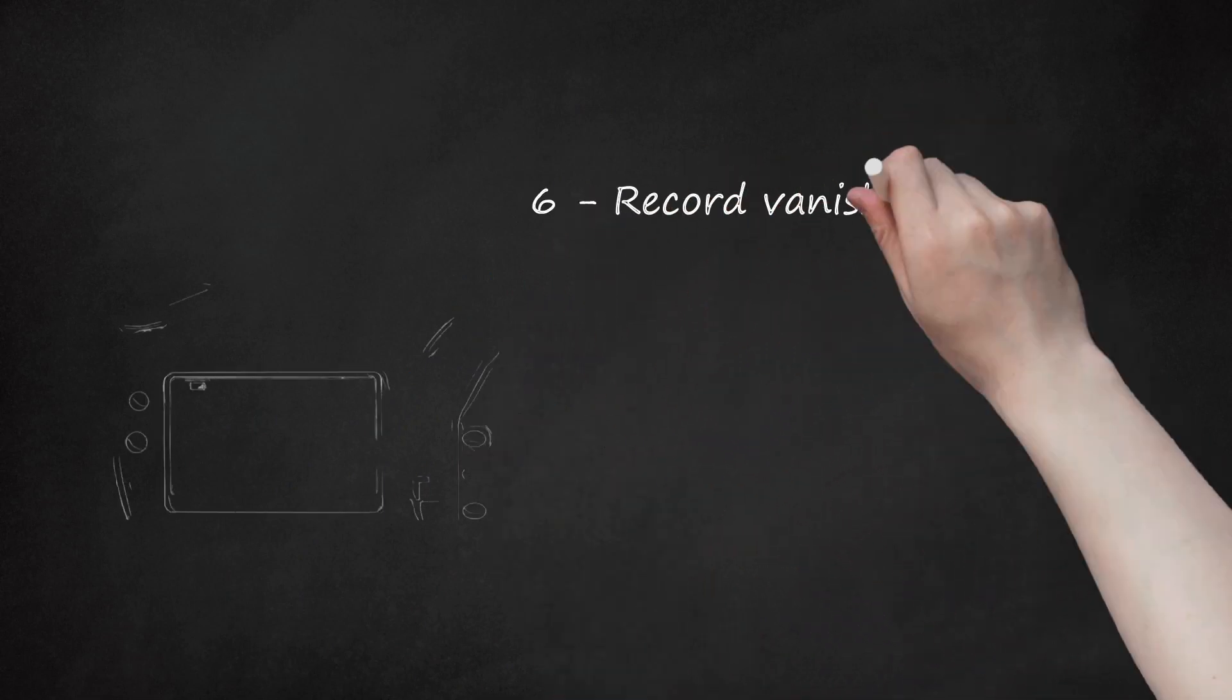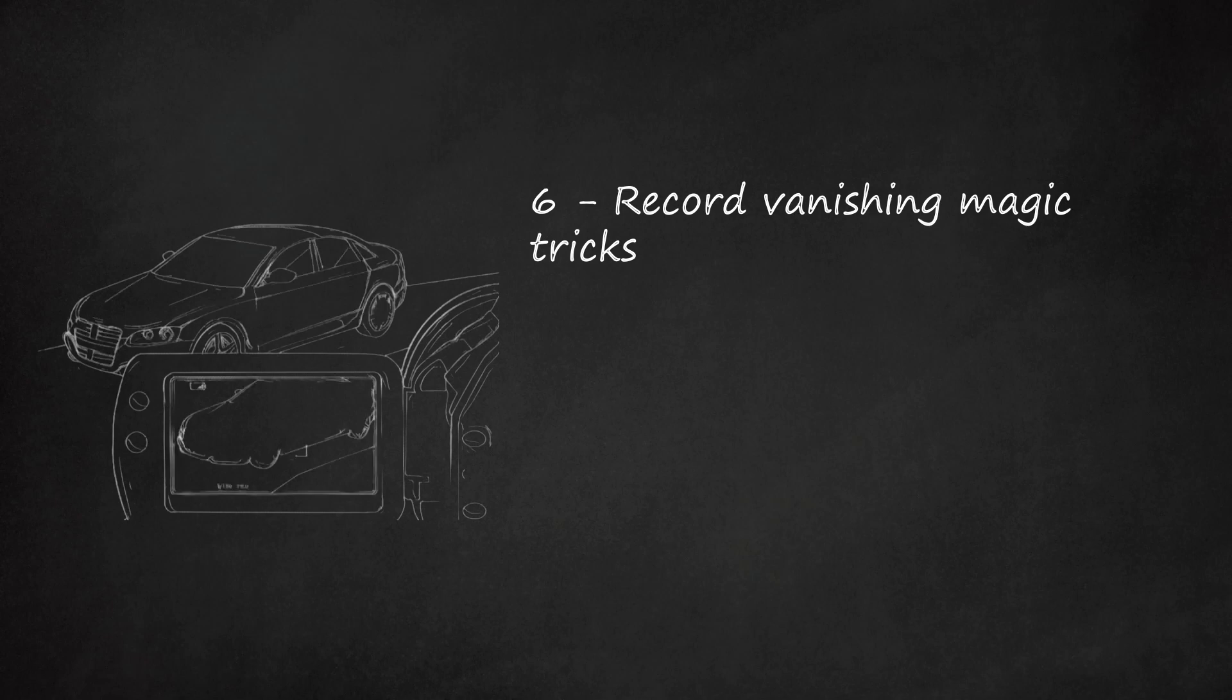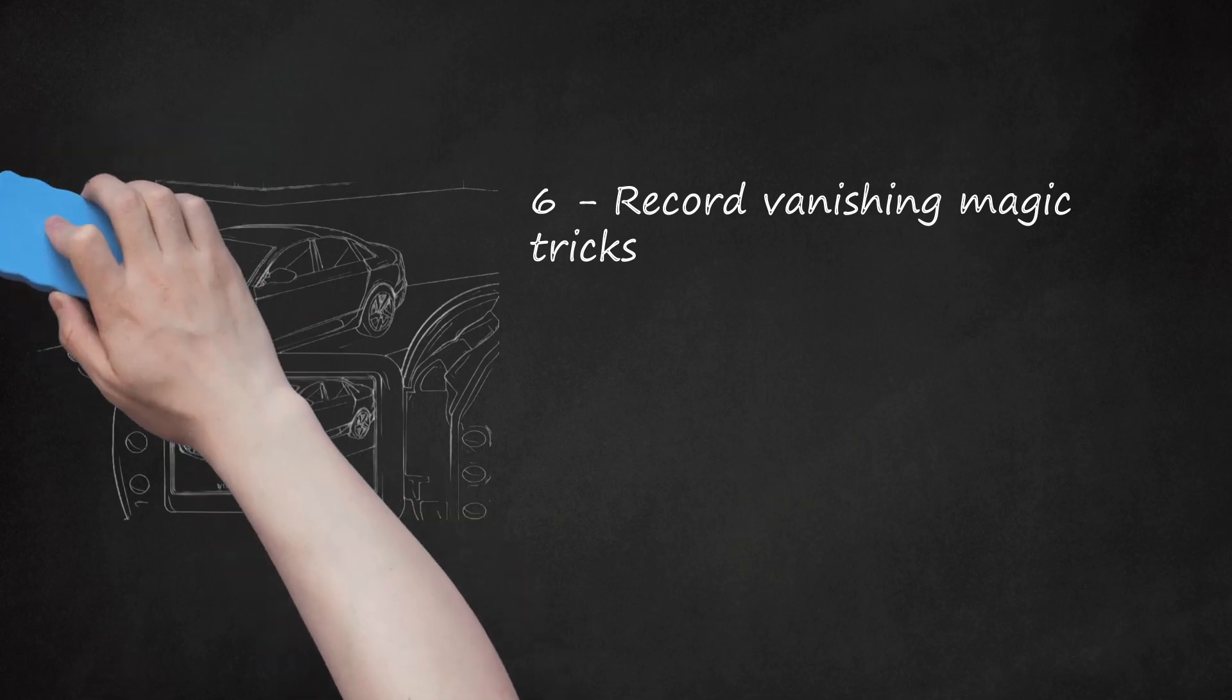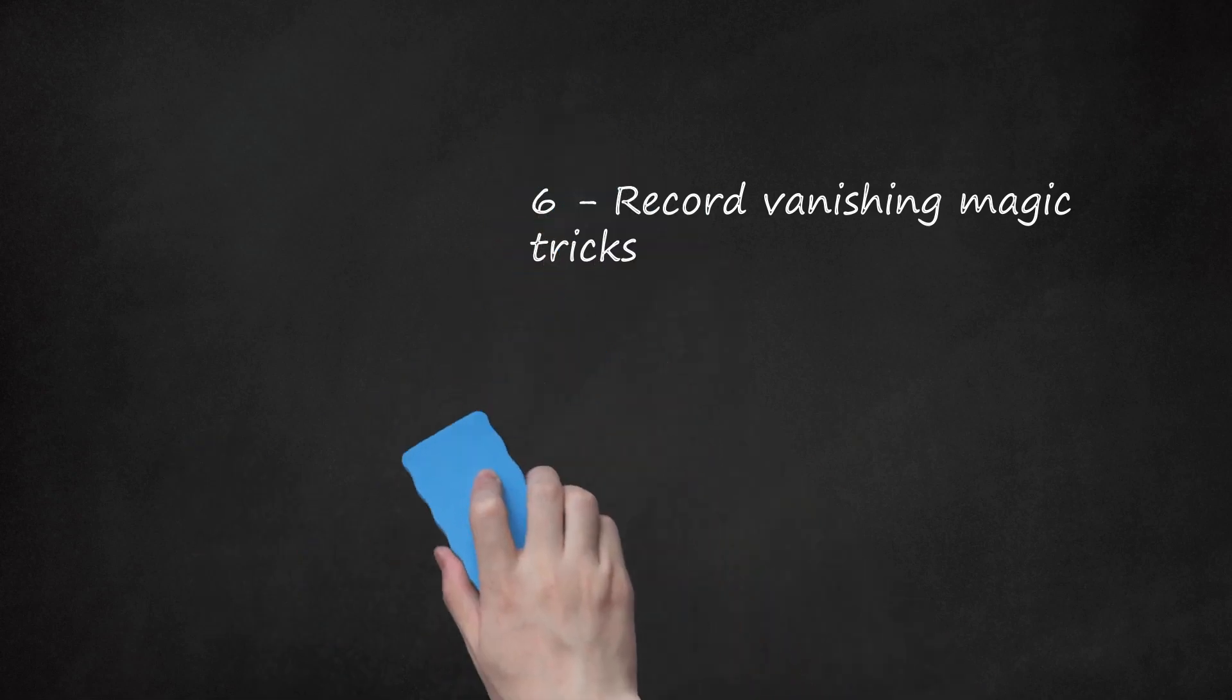Step 6 - Record Vanishing Magic Tricks. Another way for you to perform magic tricks is by using the camera to relay your magic tricks. Follow the above steps to incorporate various approaches to making somebody disappear. You could even expand beyond people and cause cars to disappear. Be creative and have some fun in the process.